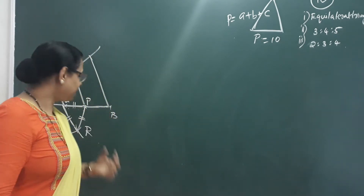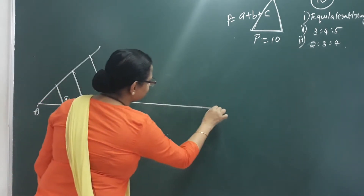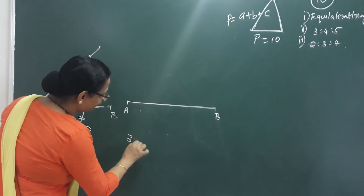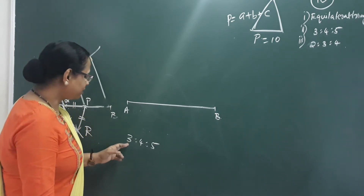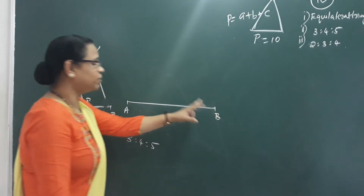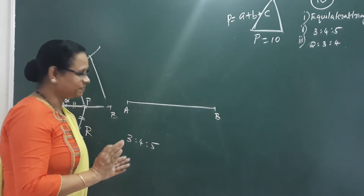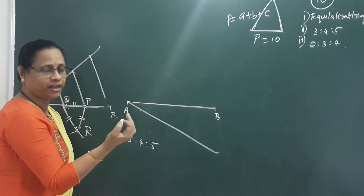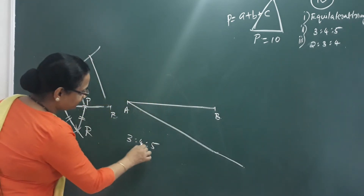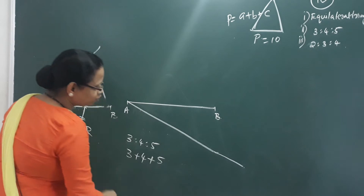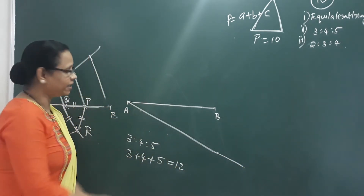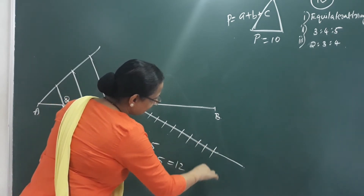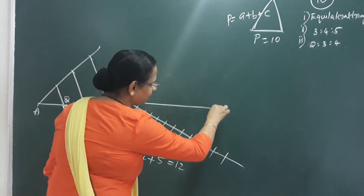Now for the triangle with sides in ratio 3 is to 4 is to 5. This is a 10 cm long line AB. The ratio is 3 is to 4 is to 5. The total parts are 3 plus 4 plus 5 equals 12. We divide this into 12 equal parts: 1, 2, 3, 4, 5, 6, 7, 8, 9, 10, 11, 12 equal parts.